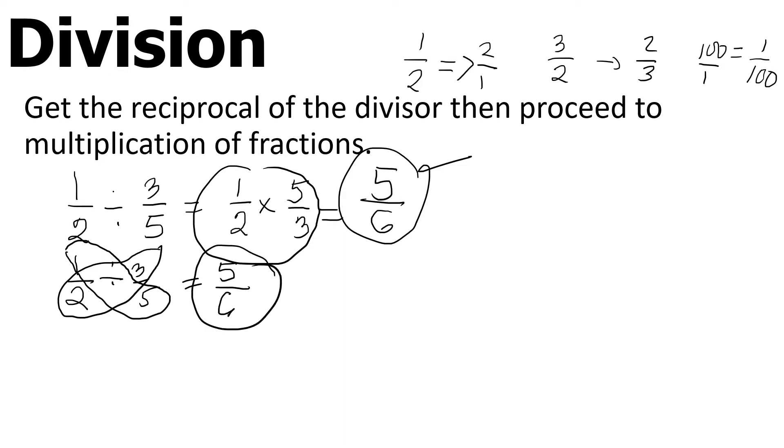Example number three: two fifths divided by five sevenths. Cross-multiply: two times seven equals fourteen, five times five equals twenty-five. That's it. For your exam, if you get this type of question, it takes only five to ten seconds.